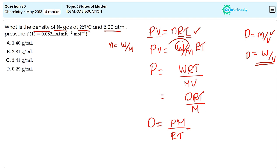The value of pressure is given, that is 5 atm, and temperature is 227 degrees Celsius. And the R value is given as 0.082 liter atm Kelvin raised to minus 1, mole raised to minus 1.